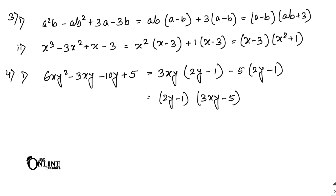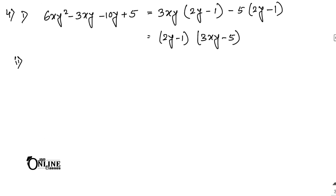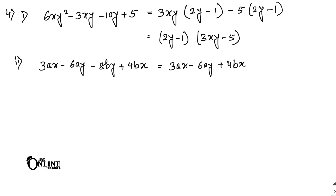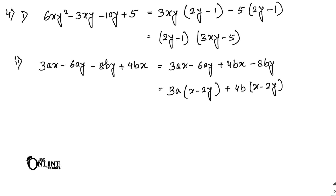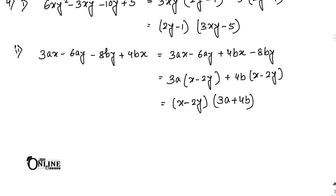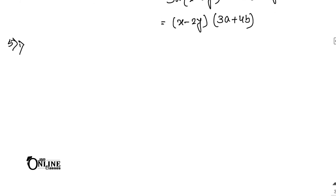Number 4.2: 3ax - 6ay - 8by + 4bx. Rearrange as 3ax - 6ay + 4bx - 8by. Common 3a from the first two gives 3a(x - 2y). Common 4b from the next two gives 4b(x - 2y). So (x - 2y) is the first factor and (3a + 4b) is the second.